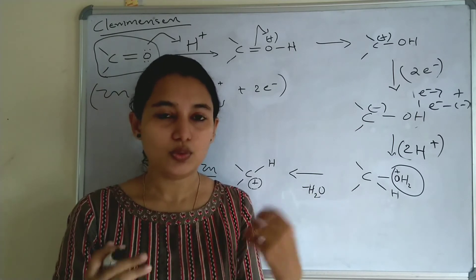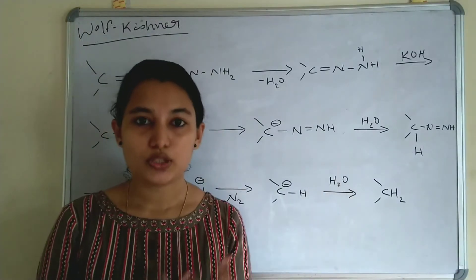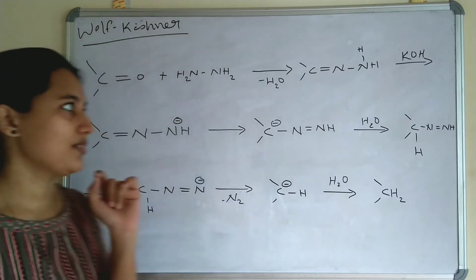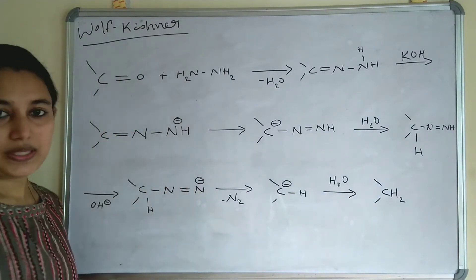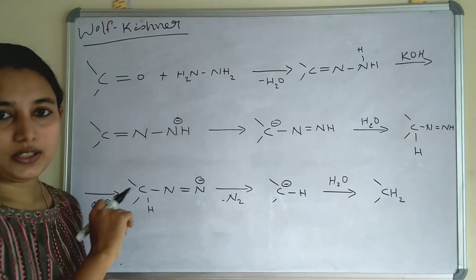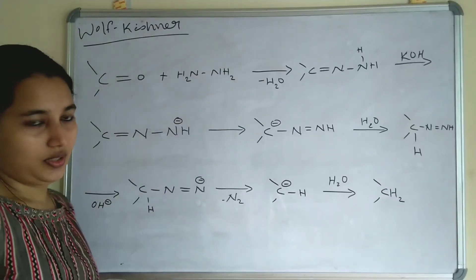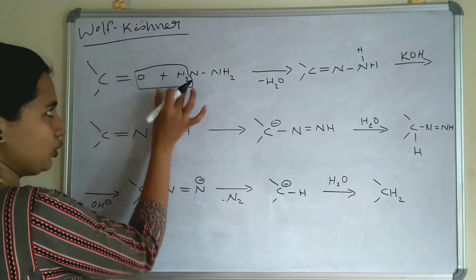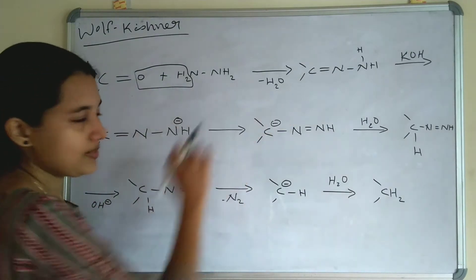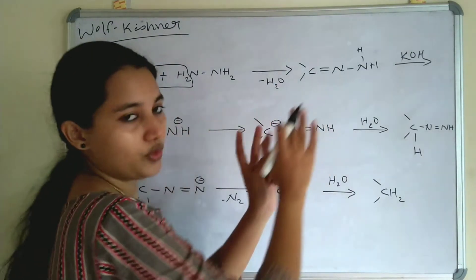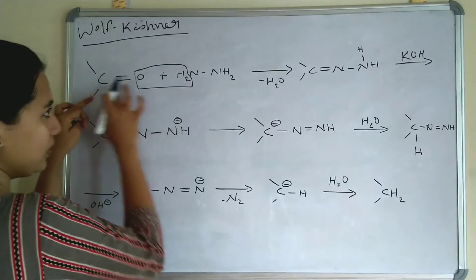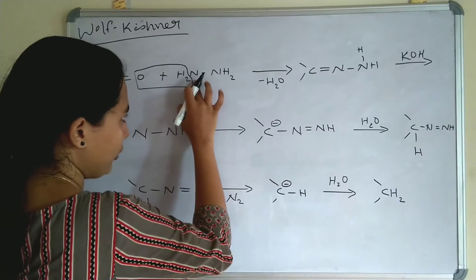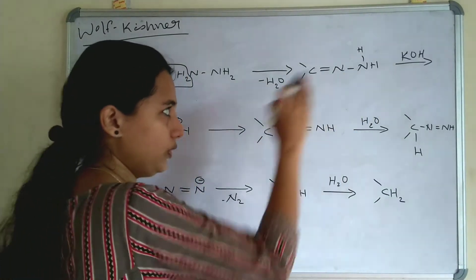Now we will see the mechanism of Wolff-Kishner Reduction. It takes place in basic media in the presence of hydrazine (NH₂-NH₂). A carbonyl compound reacts with hydrazine: water is eliminated and a C=N-NH₂ intermediate (a hydrazone) is formed.